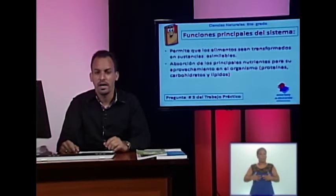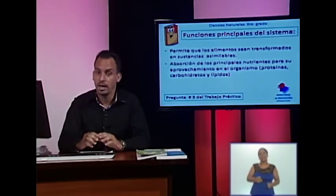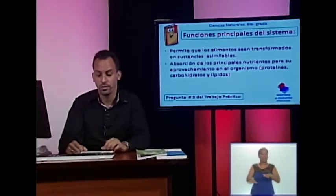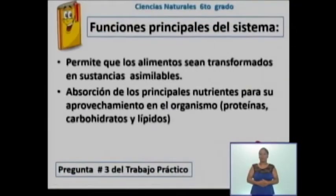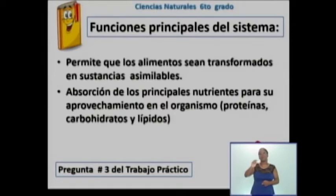Espero que hayan podido escribir el nombre de algunos de los órganos que intervienen en el sistema digestivo. A continuación les estaré presentando algunas imágenes que les sugiero que lleven a sus libretas. Aquí les presento algunas de las funciones principales del sistema digestivo: este sistema permite que los alimentos sean transformados en sustancias asimilables, y también permite la absorción de los principales nutrientes para su aprovechamiento en el organismo, como son las proteínas, carbohidratos y lípidos. Estos elementos les sirven para el desarrollo de la pregunta número 3 de su trabajo práctico integrador.